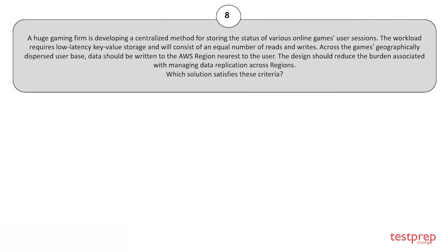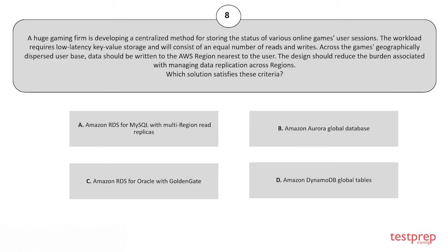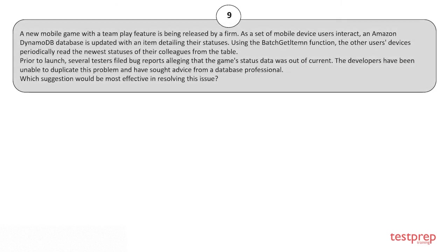Question 8: A large gaming firm is developing a centralized method for storing the status of various online games' user sessions. The workload requires low-latency key-value storage with an equal number of reads and writes across geographically dispersed users. Data should be written to the AWS region nearest to the user, and the design should minimize the burden of managing data replication across regions. Options: A) Amazon RDS for MySQL with multi-region read replicas. B) Amazon Aurora Global Database. C) Amazon RDS for Oracle with GoldenGate. D) Amazon DynamoDB Global Tables. The correct answer is option D.